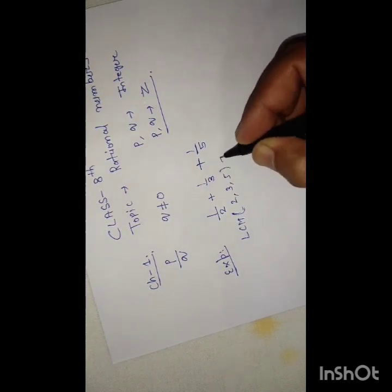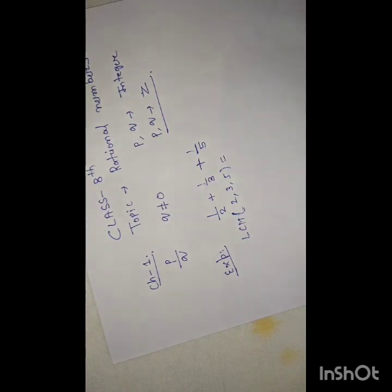So if we talk about this question, the denominators 2, 3, and 5 are all prime numbers, so the LCM will be the product of these prime numbers.